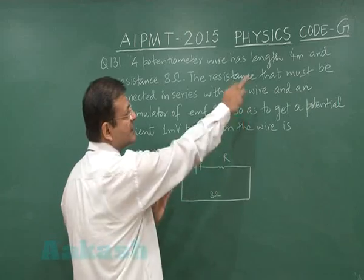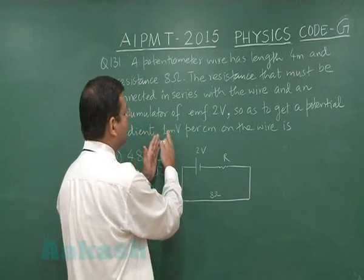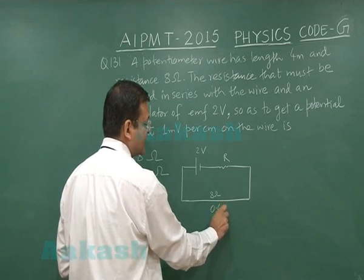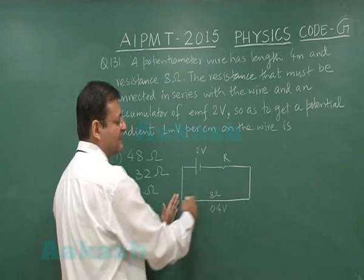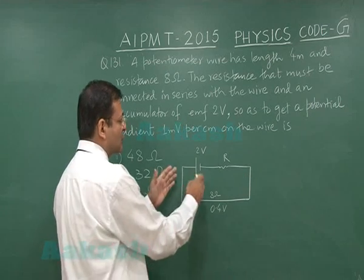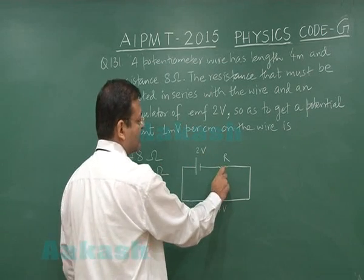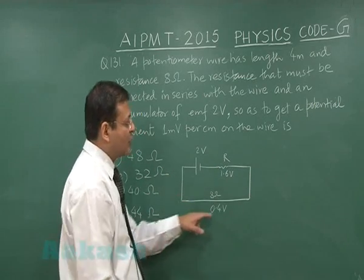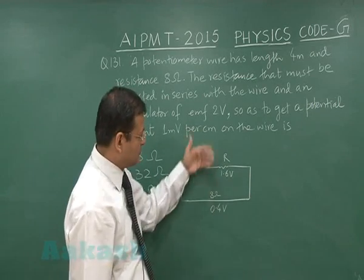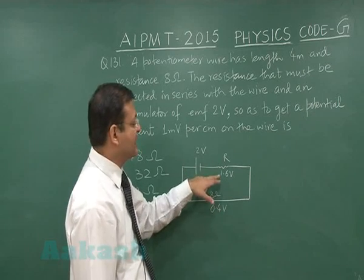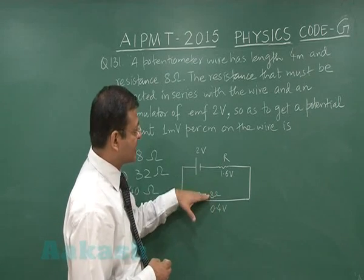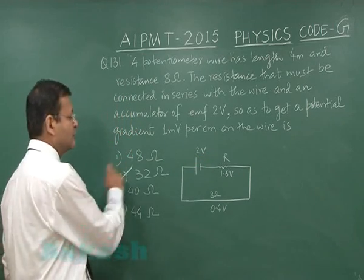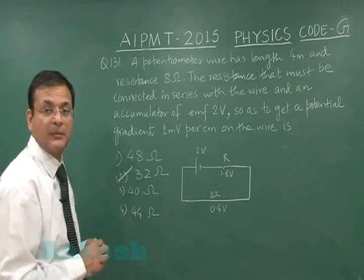The total length is 4 meters, which is 400 centimeters. At 1 millivolt per centimeter, the voltage drop across the wire is 400 × 1 mV = 0.4 volt. The remaining voltage across the series resistance R is 2 − 0.4 = 1.6 volts. Since it is a single loop, the same current flows, so resistance is proportional to voltage. The ratio 1.6/0.4 equals 4, so R equals 4 × 8 = 32 ohms. Mark option 2 for question number 131.